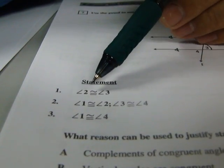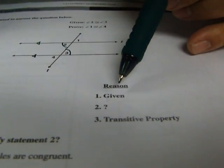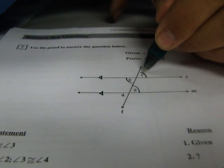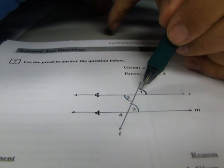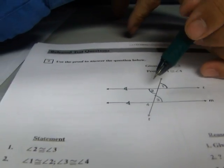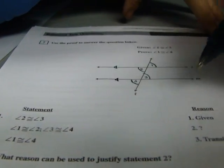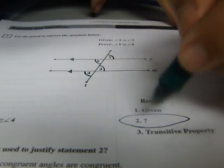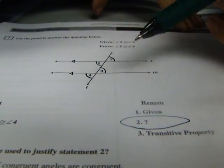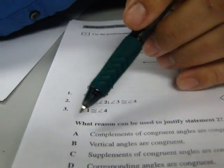So angle two is congruent to angle three, given. Angle one is congruent to angle two. Well, how do we know this? They're vertical angles, exactly. Vertical angles. And angle three is congruent to angle four? Again, vertical angles. So that's what's missing. Well, that's pretty simple. They're vertical angles. So we're going to say something about vertical angles.